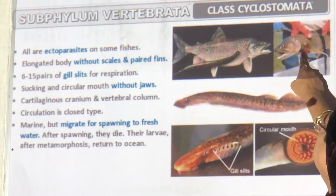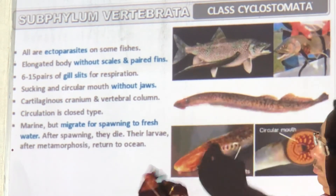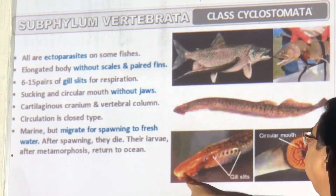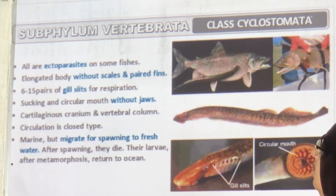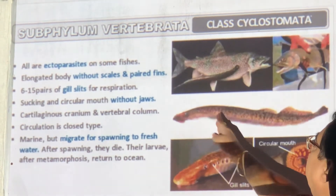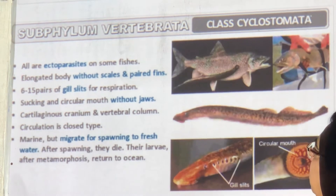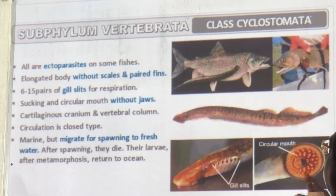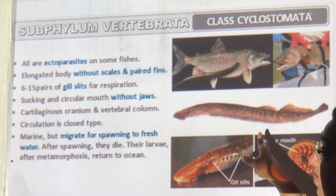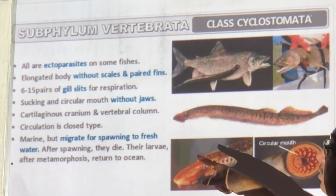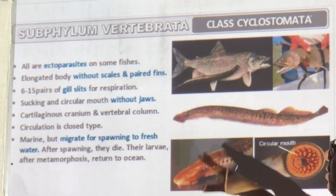Cyclostomata are ectoparasites with a circular sucking mouth without a jaw — no jaw, soft. They have six to fifteen pairs of gills for respiration. Circulation is closed. They are marine but migrate — from fresh water to marine and marine to fresh water. After laying eggs and larvae, they die.